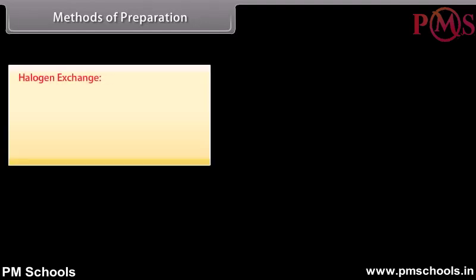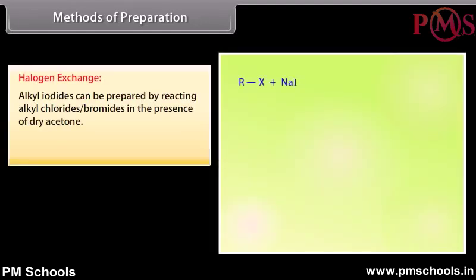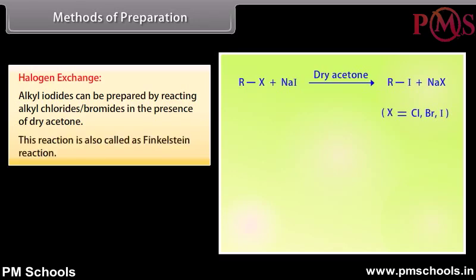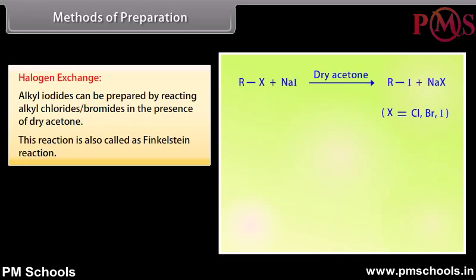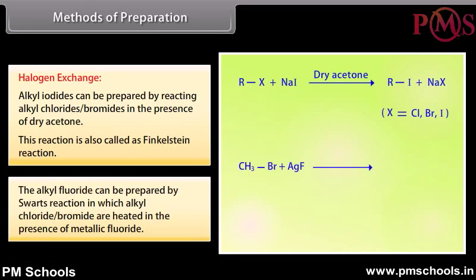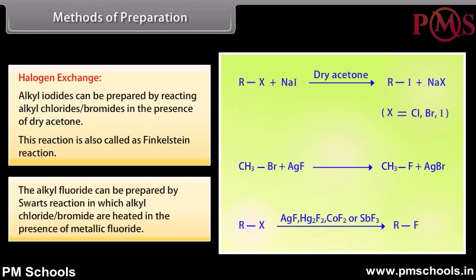Halogen exchange: alkyl iodides can be prepared by reacting alkyl chlorides or bromides in the presence of dry acetone. This reaction is also called the Finkelstein reaction. Alkyl fluorides can be prepared by the Swartz reaction, in which alkyl chloride or bromide is heated in the presence of metallic fluoride.